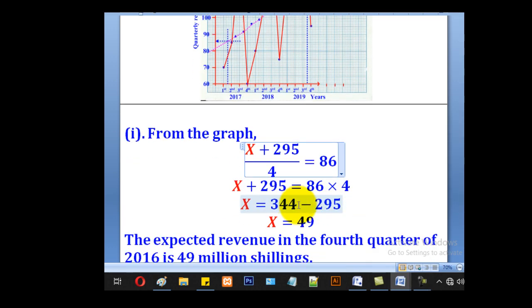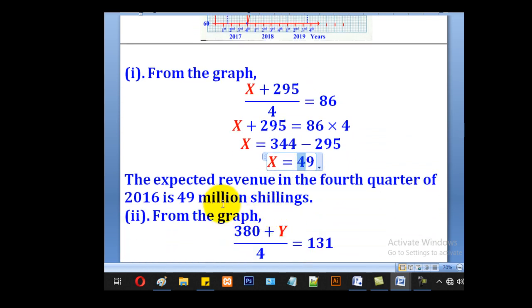When you equate the two, you make X the subject and come up with 49. Our values were in millions of shillings. So the expected revenue in the fourth quarter of 2016 is 49 million shillings.